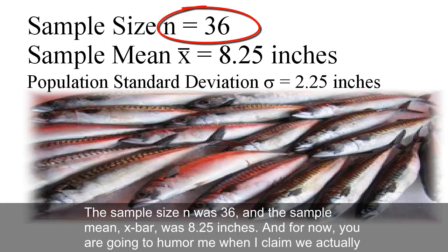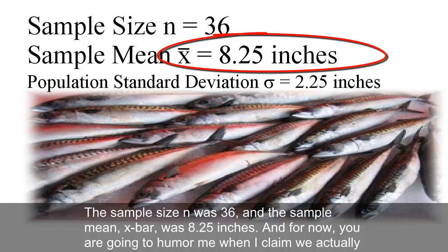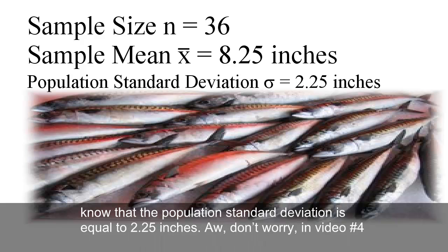The sample size n was 36 and the sample mean, x bar, was 8.25 inches. And for now you're going to humor me when I claim we actually know that the population standard deviation is equal to 2.25 inches.